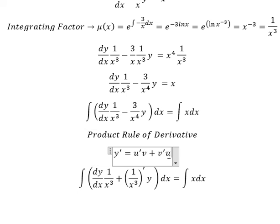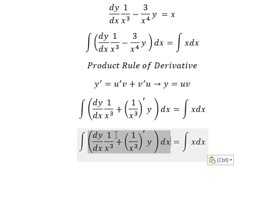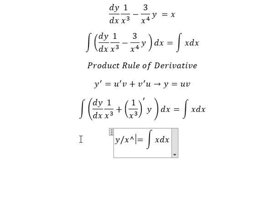Now if we do this integration, you got about y equals to uv. That means the integration of this one. We have y over x to the power of 3 equals the integration of x, you got about x square over 2. And then we put about c.